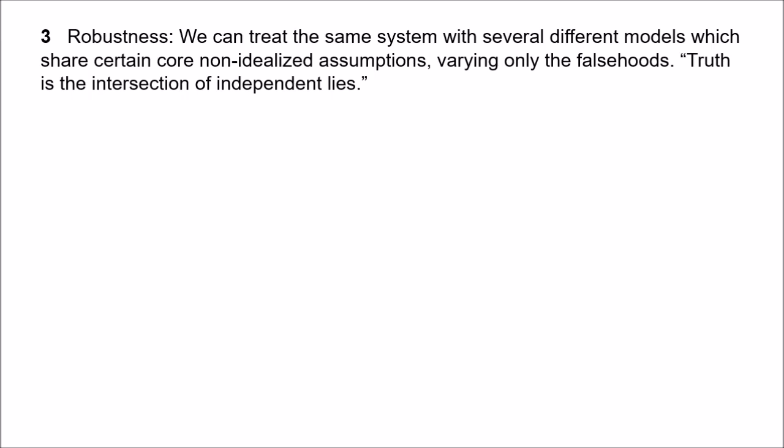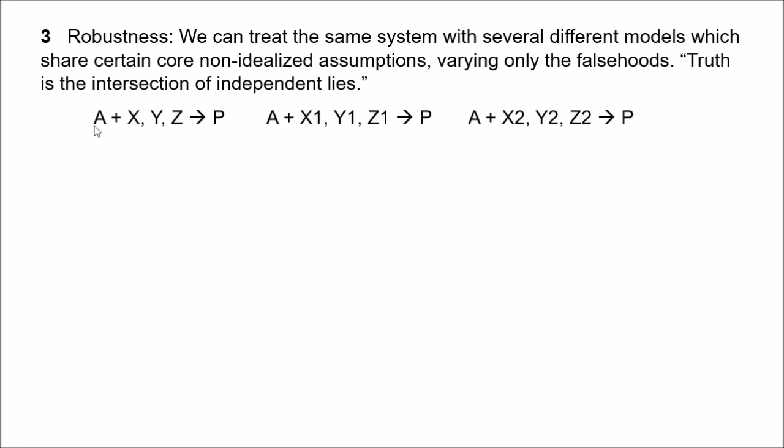A third response to the anti-realist challenge is robustness. The idea of robustness is that we can treat the same system with several different models which have different idealisations but certain common underlying assumptions which we assume are not idealised. In robustness analysis we generate a variety of different models that share these core assumptions and we vary the other claims — we vary the falsehoods. We then look for predictions that follow from all the models. If the predictions are correct, this allows us to be confident about the core assumptions. Each model has different falsehoods, so no particular falsehood is essential to the predictive success. So we have a situation where core assumptions A, plus falsehoods XYZ, entail a particular prediction P; and in the second case the same assumptions plus different falsehoods X1, Y1, Z1, entail the same prediction; and so on.